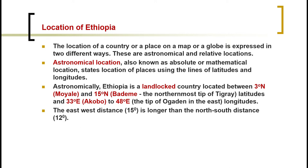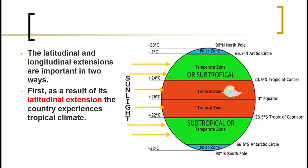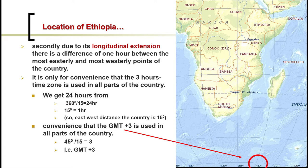The east-west distance of the country is longer than the north-south distance, around 15 degrees. The latitudinal and longitudinal locations of the country are important in two ways. First, as a result of the latitudinal extension from 3 to 15 degrees north, Ethiopia experiences a tropical kind of climate, though in central parts this is highly modified by altitude. Second, due to the longitudinal extension, there is a one-hour time difference between the most easterly point around Ogaden and the most westerly point around Berbera.